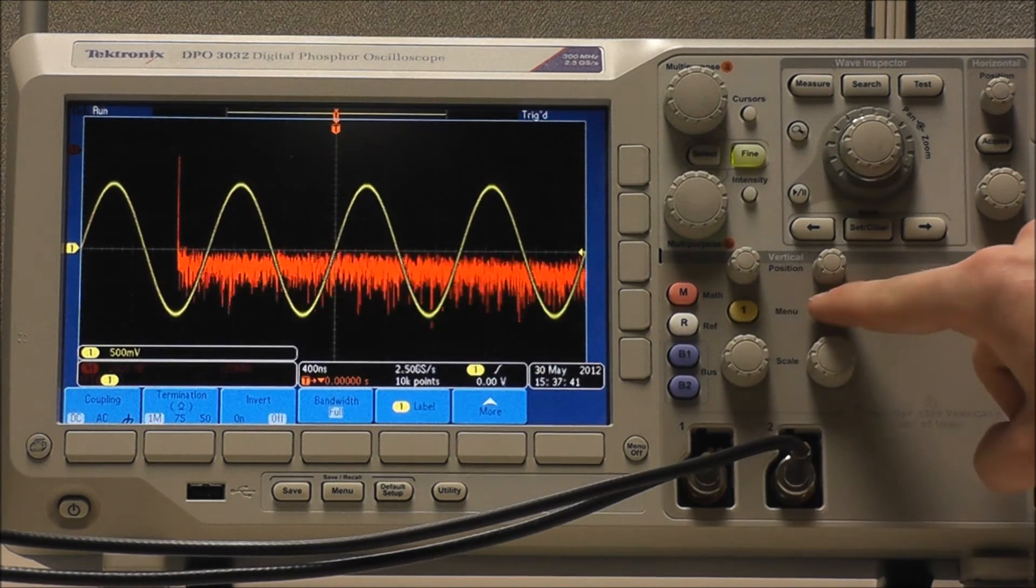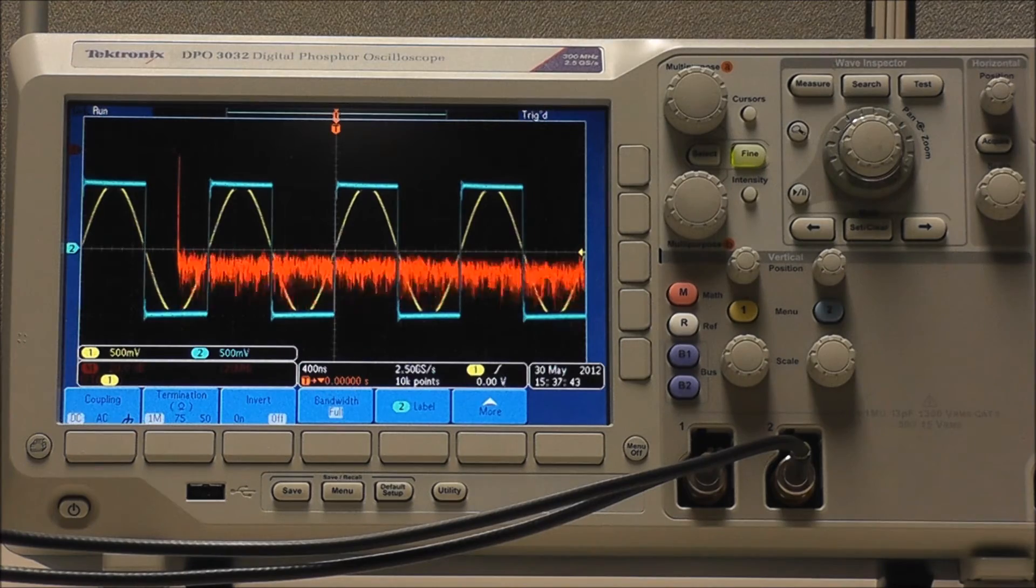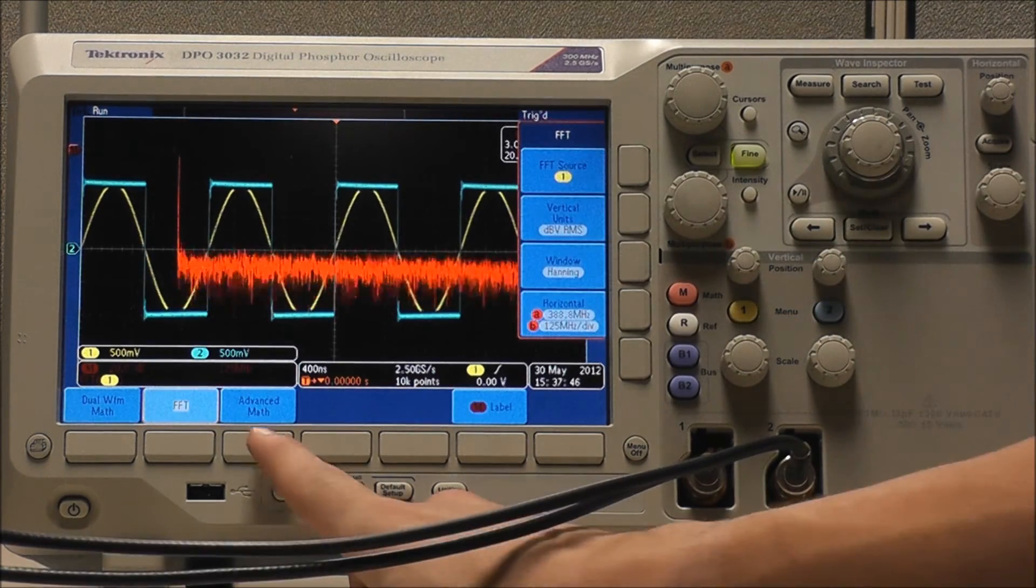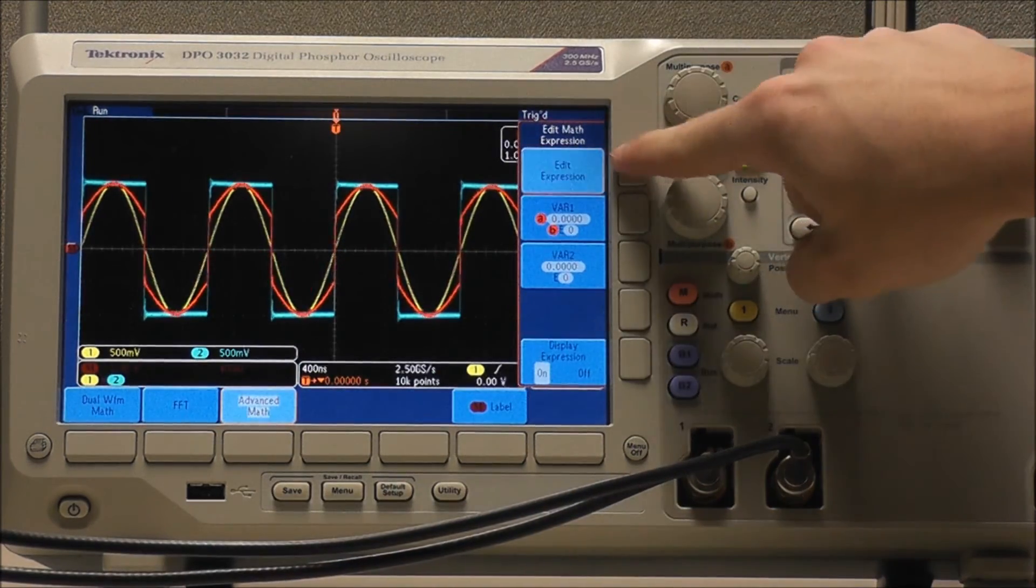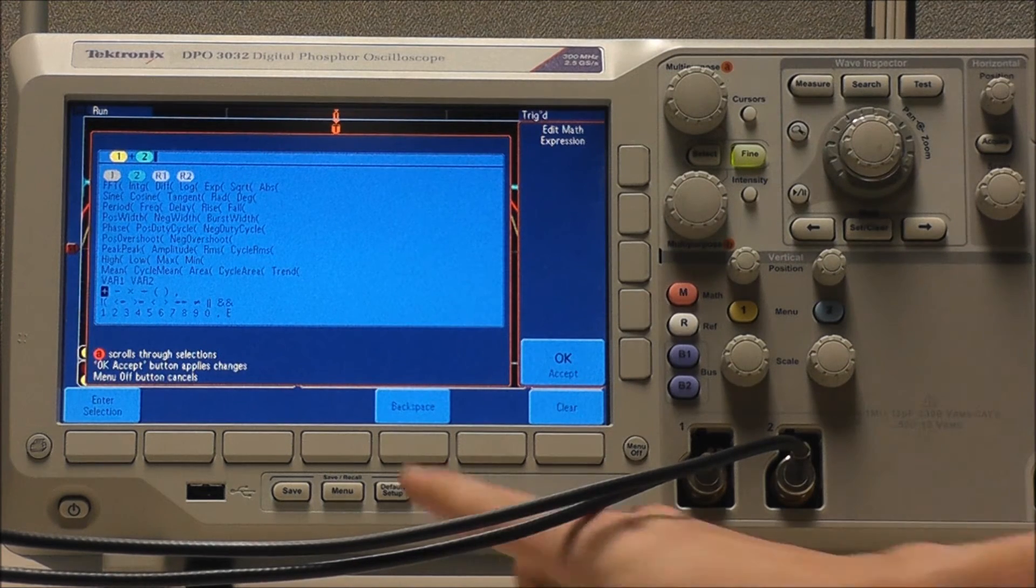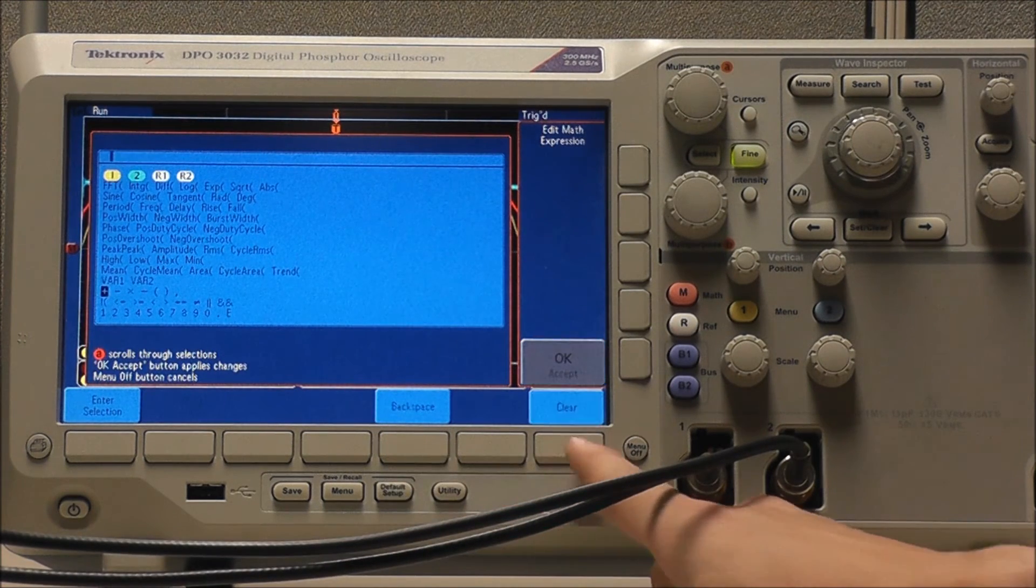And now I'm going to bring the channels back into view for this next part just as a visual tool or reference. Select advanced math, followed by edit expression. We can backspace or clear the entire section.